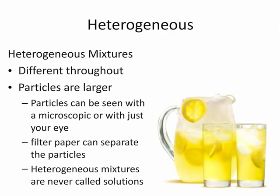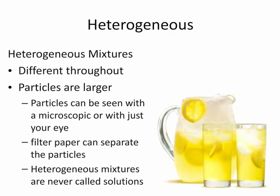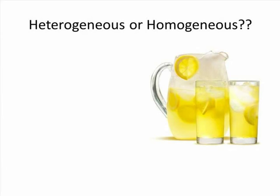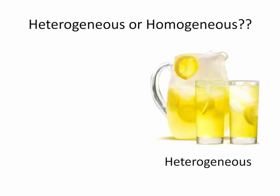Heterogeneous mixtures are never called solutions. Heterogeneous or homogeneous? Well, that depends. If the lemonade is pictured as simply a glass of lemonade mixed perfectly, then the mixture could be called a homogeneous mixture, and could also be called a solution. If another person were to think of a pitcher of lemonade with lemon slices and ice added, this would be considered a heterogeneous mixture, because the lemon slices and ice cubes are visible, making it easy to see that this mixture cannot be uniform.